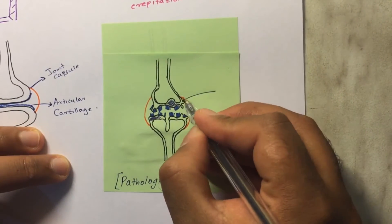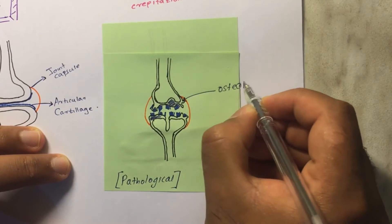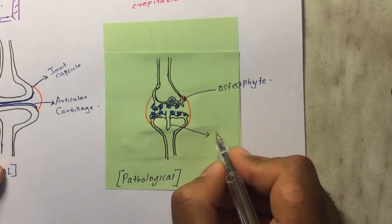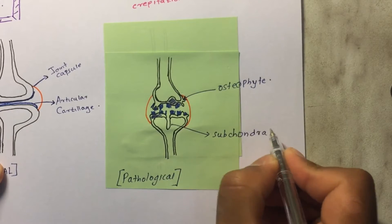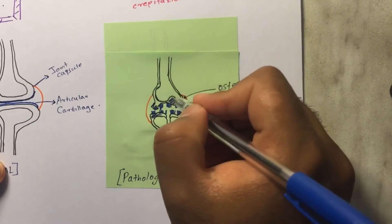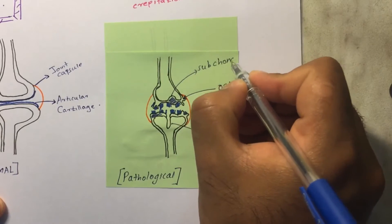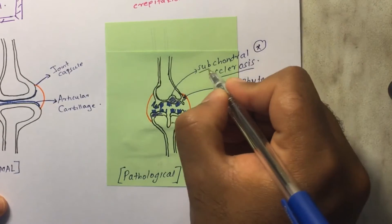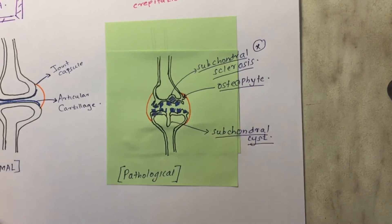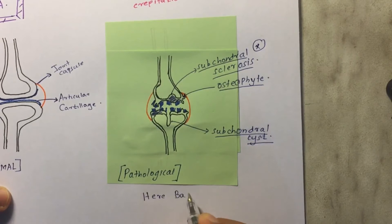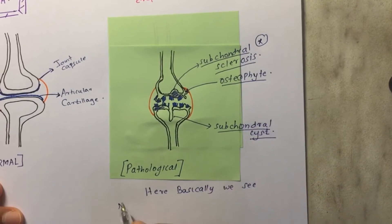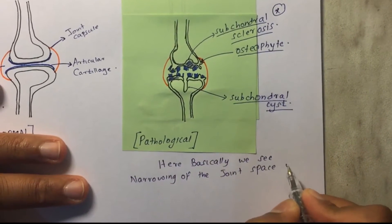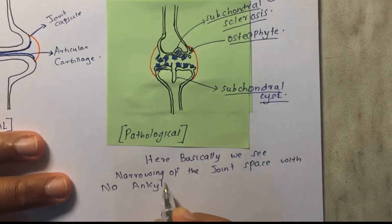In osteoarthritis, the most classical feature on radiological examination is the appearance of osteophytes — tiny bony spurs that overgrow due to asymmetric stress. You almost always notice subchondral cysts on the bone, and most importantly, subchondral sclerosis is more common in osteoarthritis than in rheumatoid arthritis. We see narrowing of the joint space, but we do not see ankylosis.